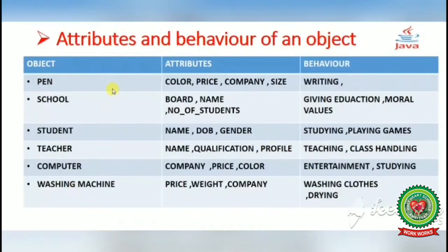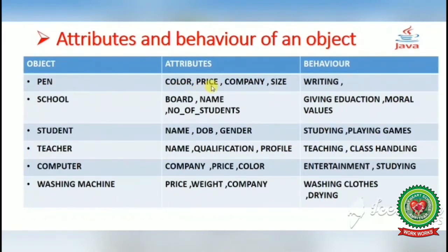Today we will take different objects and discuss their attributes and behavior. First, we have a pen object. The attributes of a pen are: color, price, company, and size. The behavior of a pen is writing.